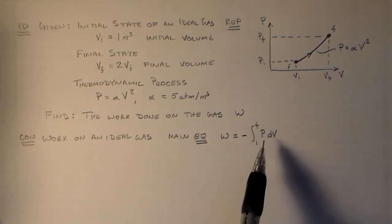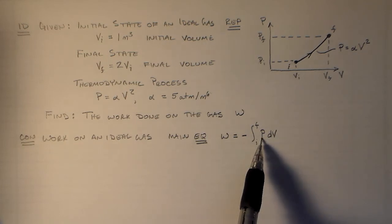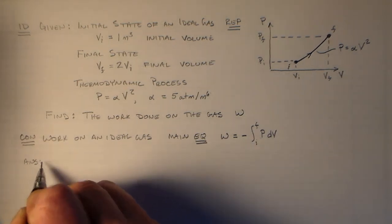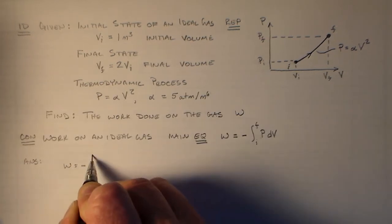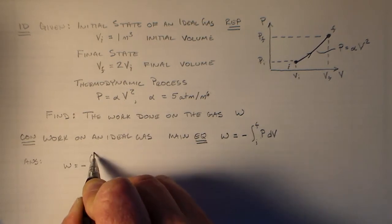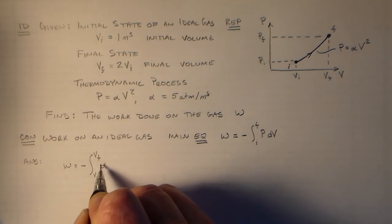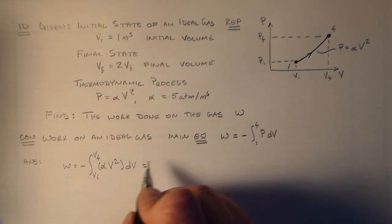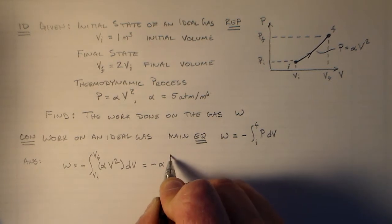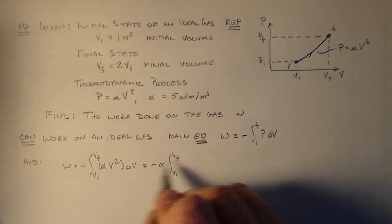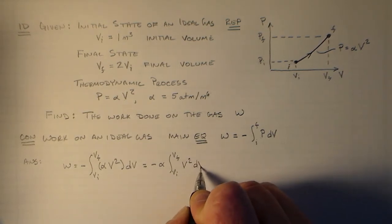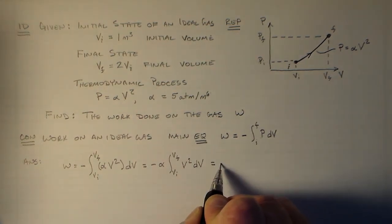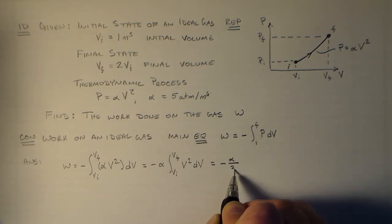So, how do we go about this? Well, we substitute this equation in here for the P. So, our answer is something like W is equal to minus the integral from the initial volume to the final volume of alpha V squared dV. Alpha there is a constant, so we can just pull the constant out. Minus alpha integral Vi to Vf V squared dV. This is not going to be very difficult. The integral is one-third V cubed.